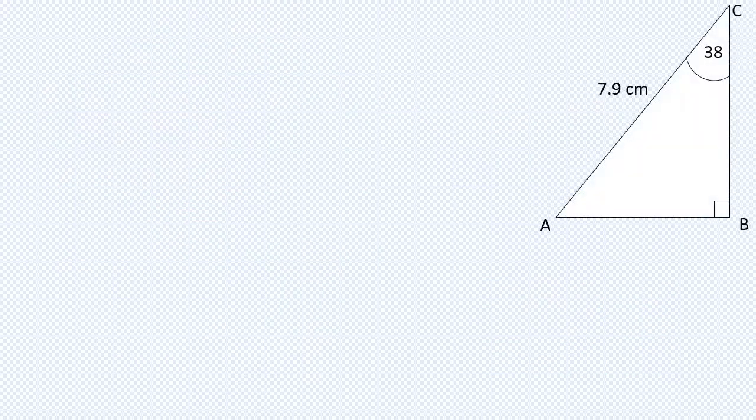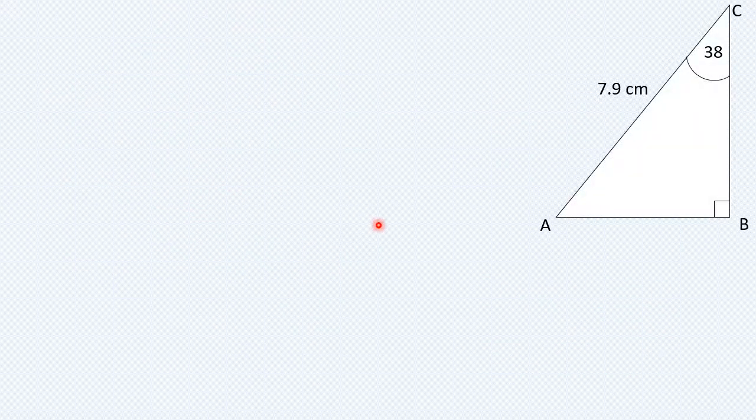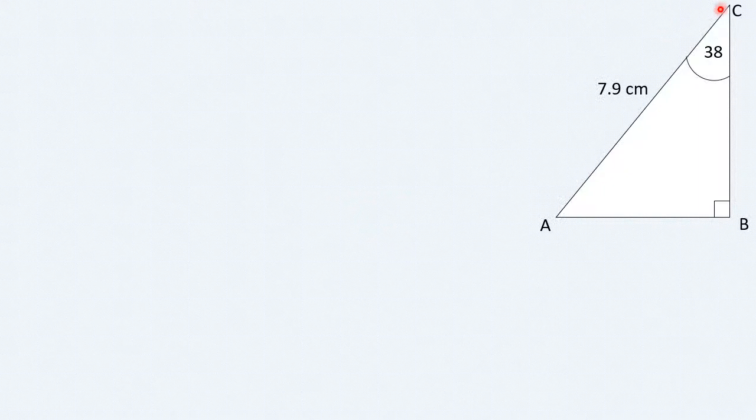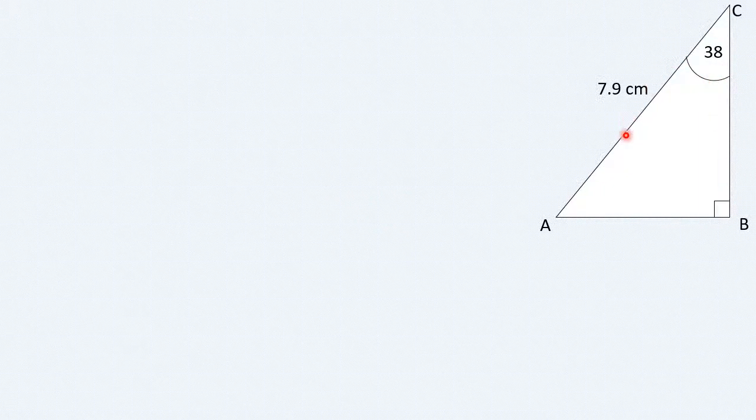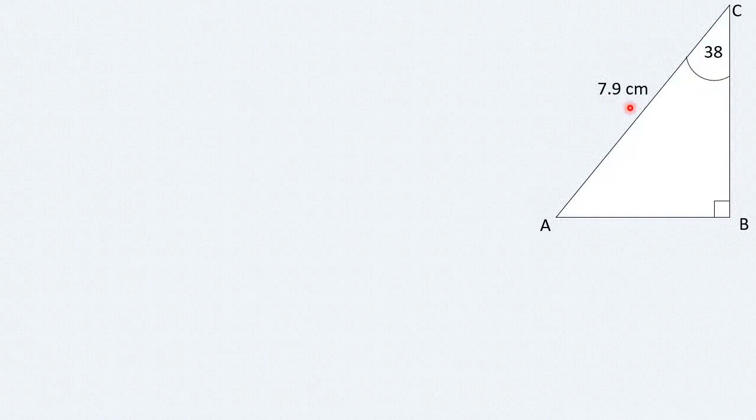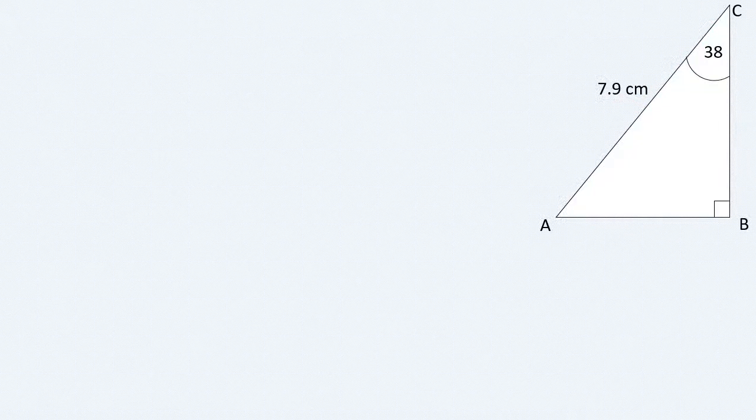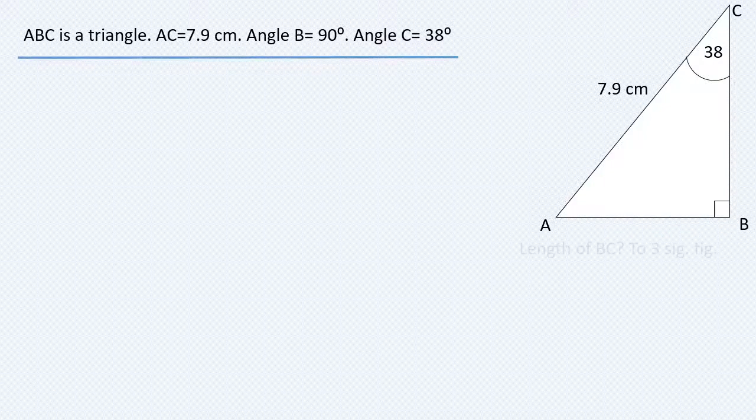We have a right angle triangle ABC, where we're given angle C equal to 38 degrees, and side AC equals to 7.9 centimeters, and we're asked to get side BC.